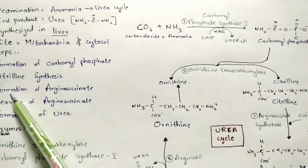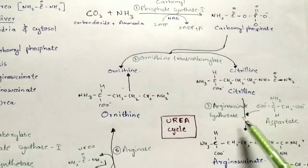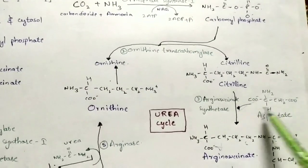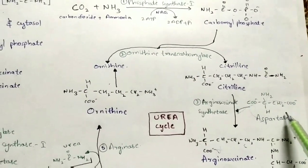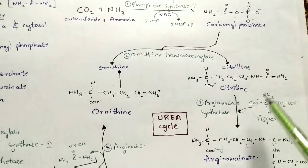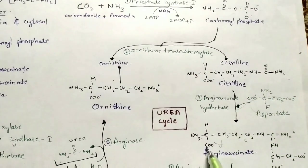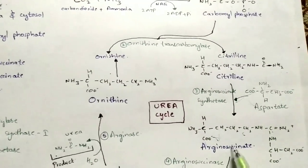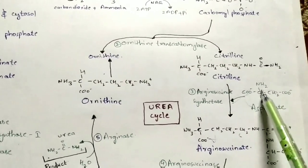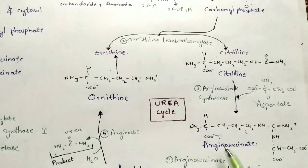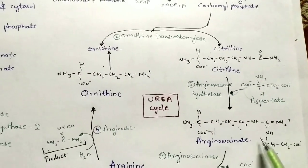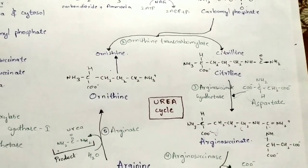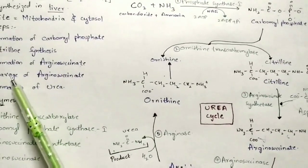The third step is formation of arginosuccinate. This is the structure of arginosuccinate. It is formed by adding aspartate to citrulline — this is the molecular structure of aspartate. When aspartate is used in this reaction, it leads to the formation of arginosuccinate. The bond is formed by liberating one hydrogen from the amino group.